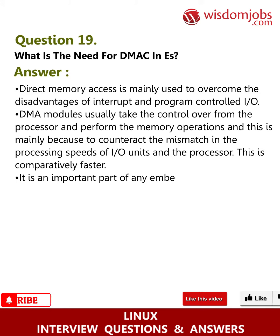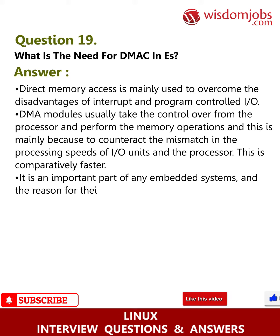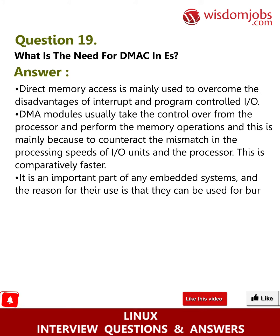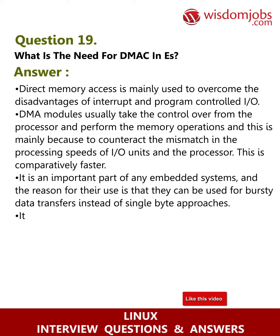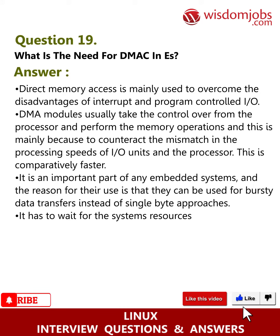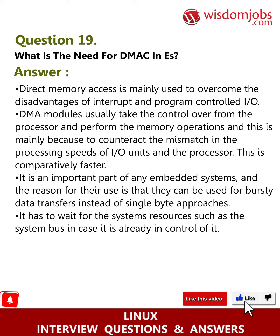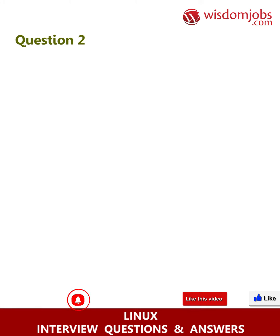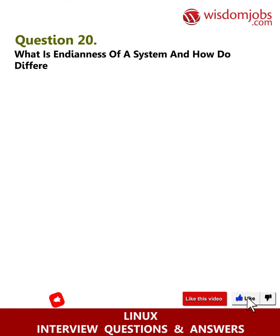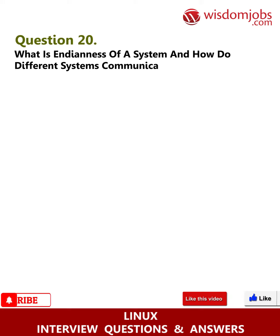DMA is comparatively faster and is an important part of any embedded system. The reason for its use is that it supports bursty data transfers instead of single-byte approaches. However, it has to wait for system resources such as the system bus if it is already in use by another controller.